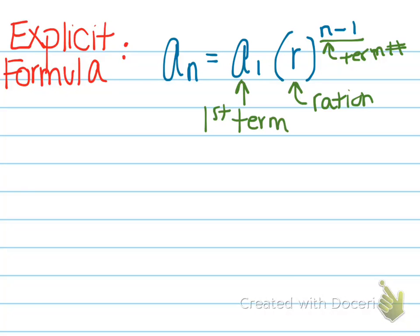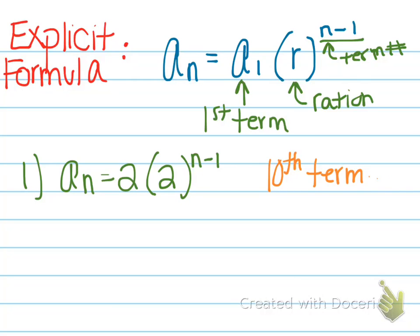If I gave you the example a sub n equals 2 times 2 to the n minus 1 and I said find the 10th term, you would do 2 times 2 to the 10th minus 1 which is 2 times 2 to the 9th and when you do this in the calculator you get 1,024.